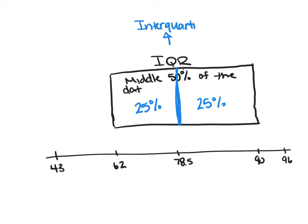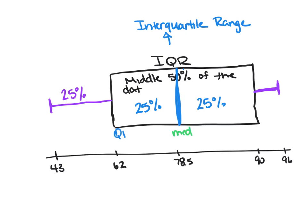The IQR tells us about the middle 50% of the data. We extend whiskers to the minimum value and to the maximum value. From the minimum to Q1 is 25% of the data, from Q1 to the median is 25%, from the median to Q3 is 25%, and from Q3 to the maximum is also 25%. This is what the box plot is showing us — the position of the values and how much data sits within each section.